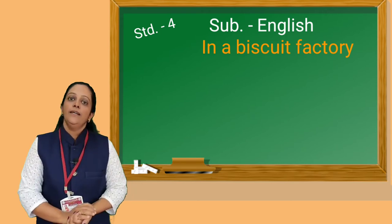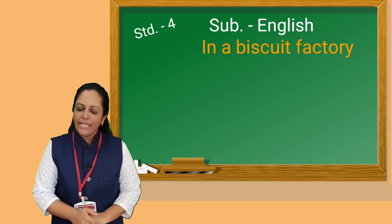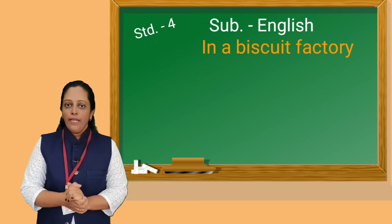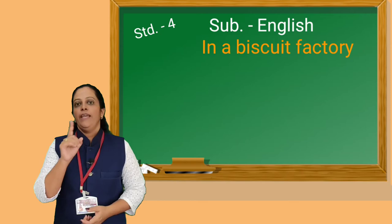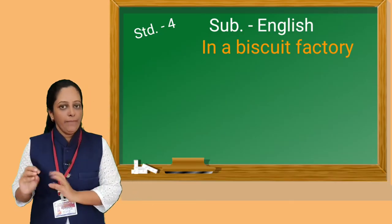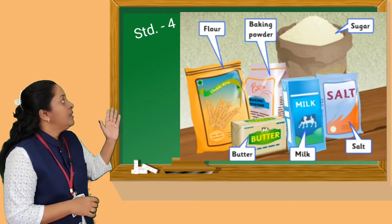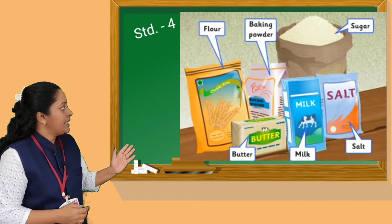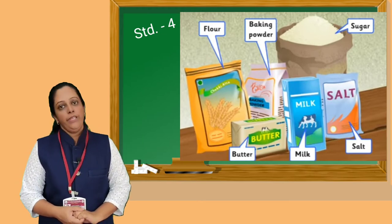Do you remember, students, in third standard we learned a recipe? Which was that? Yes, it was making of banana delight. And for making banana delight, we need some ingredients — they are bananas, sugar, and milk. With the help of these three ingredients, we made banana delight. Like this, for making biscuits, we also need some ingredients, and they are: flour, milk, butter, sugar, salt, baking powder, etc. With the help of these ingredients, we can make biscuits.